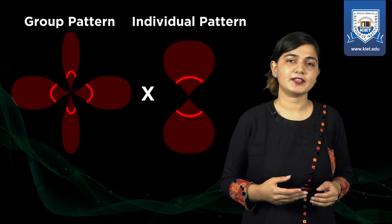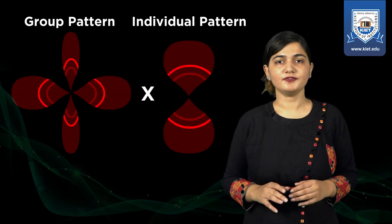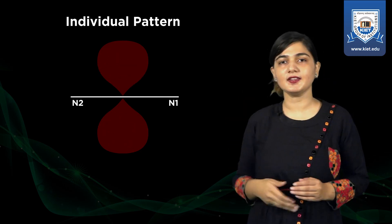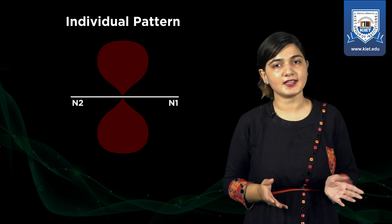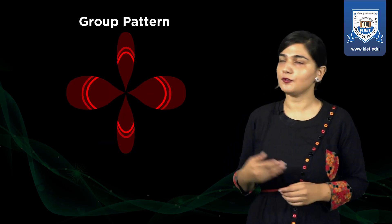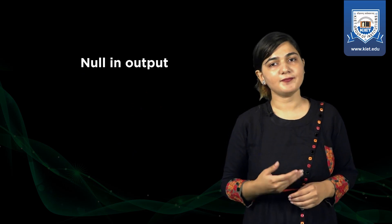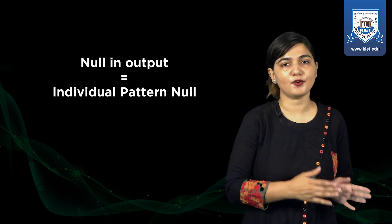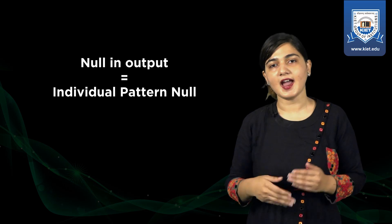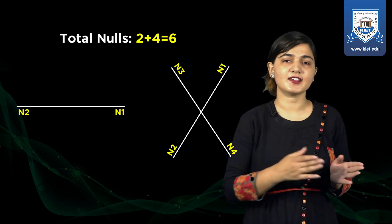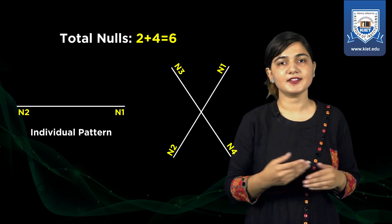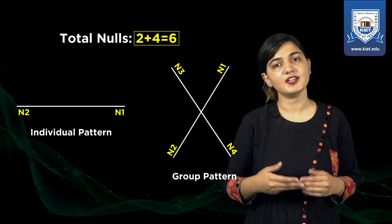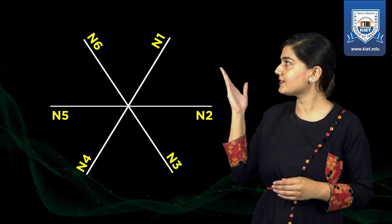Now we have the group pattern and the individual pattern, so we will do pattern multiplication to find out the output radiation pattern of the four point antenna structure. The individual pattern has two nulls — in the plus-x and minus-x directions. The group pattern has four nulls. The property of pattern multiplication states that the output radiation pattern has nulls equal to the sum of the nulls of the individual pattern and the group pattern, which is 2 + 4 = 6 nulls total.